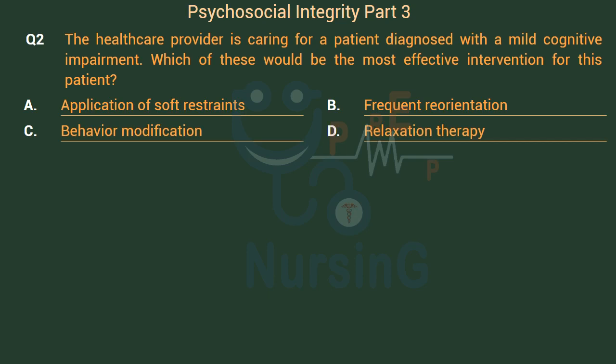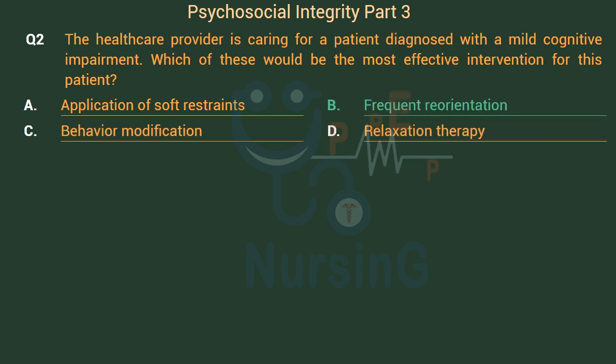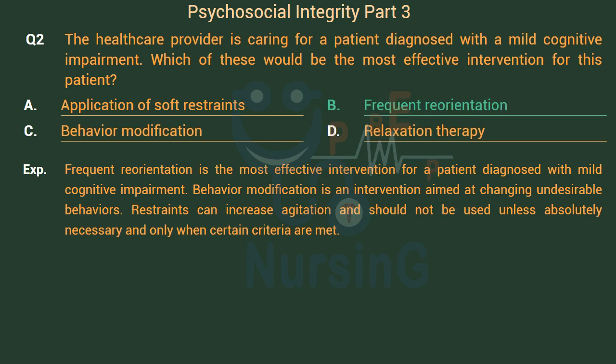The right answer is Option B: Frequent reorientation. Frequent reorientation is the most effective intervention for a patient diagnosed with mild cognitive impairment. Behavior modification is an intervention aimed at changing undesirable behaviors. Restraints can increase agitation and should not be used unless absolutely necessary and only when certain criteria are met.